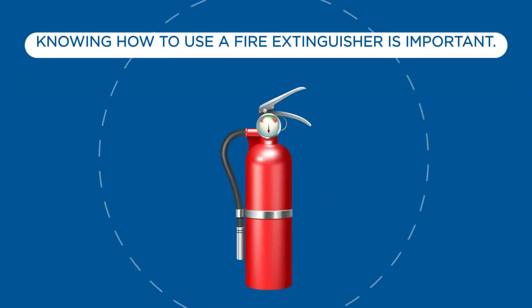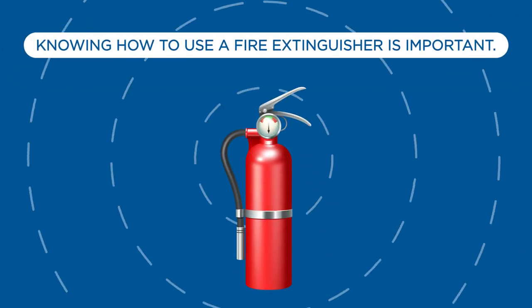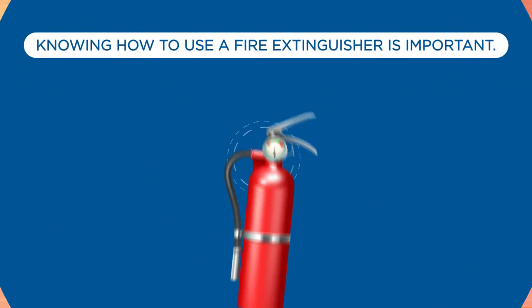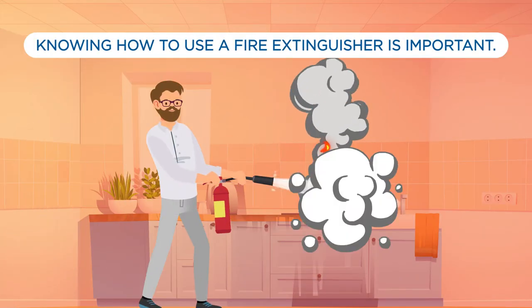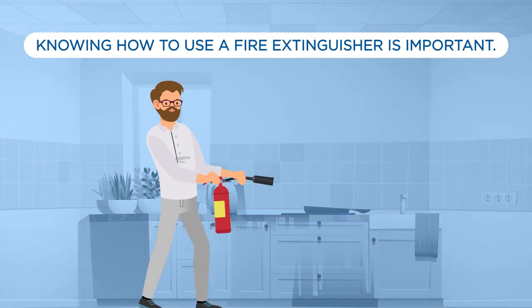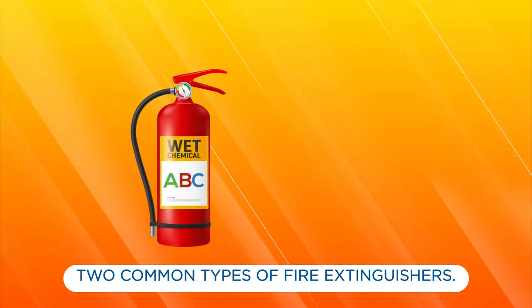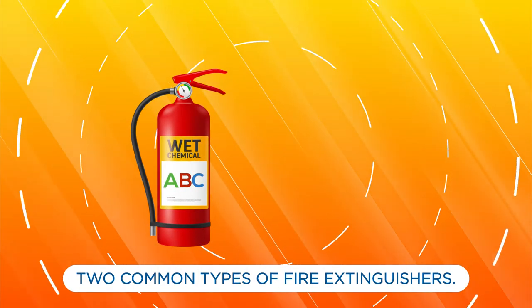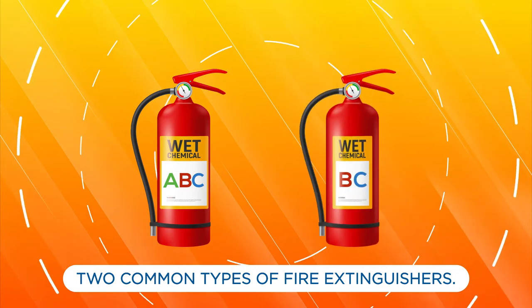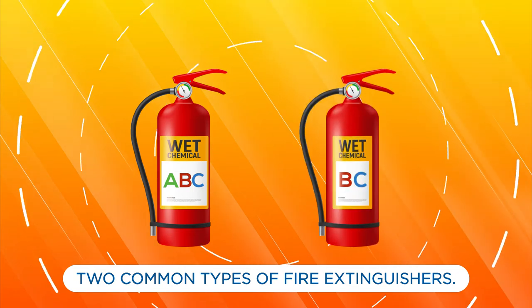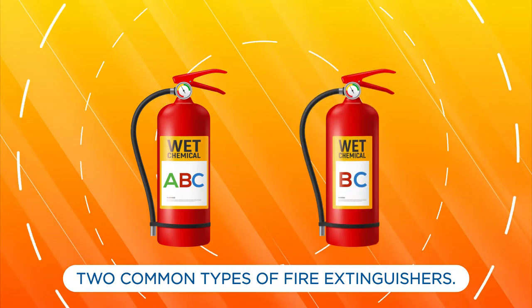Knowing how to use a fire extinguisher is an important part of fire safety. Different types of fire extinguishers are designed to fight different types of fires. Two of the most common types are the Class ABC or Class BC fire extinguishers. Both are acceptable to use in the home.